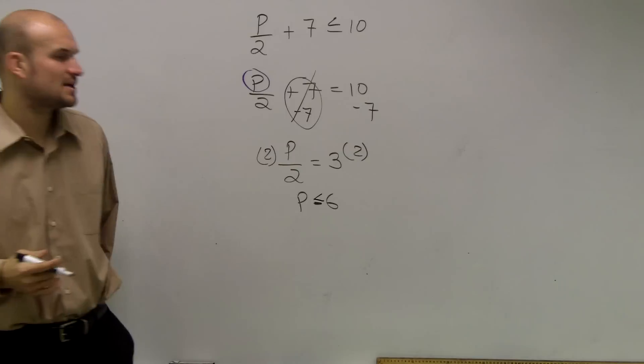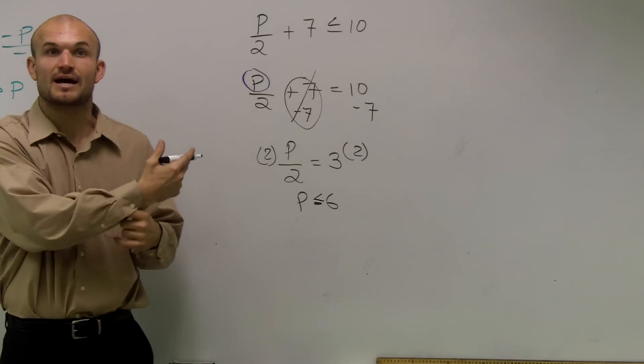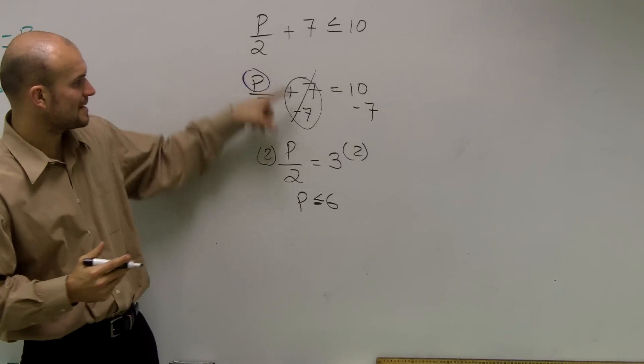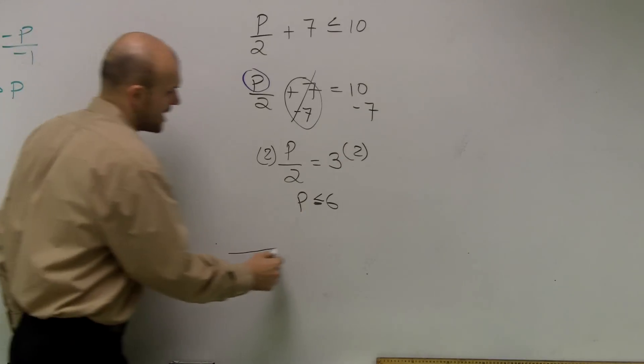And remember, there was one step here that we had—remember, if you multiply or divide by a negative number, you had to flip the sign. So I go back and look through my steps. Did I multiply or divide by a negative number? No. So I'm just going to plug it back the way it was.